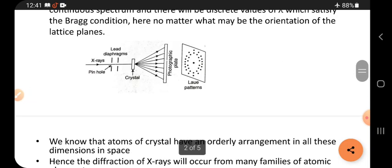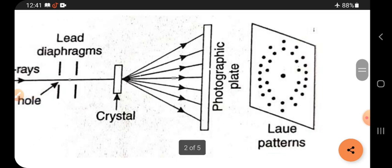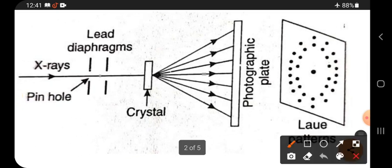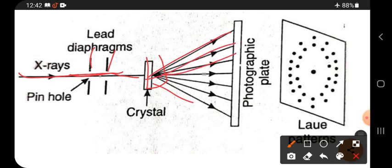See the complete diagram once again. X-rays are coming from the source, falling on the diaphragms, and making a fine pencil beam to fall on the crystal. When they fall on the crystal, they penetrate and start diffracting in different directions, producing dots on the plate and a central spot at the center.